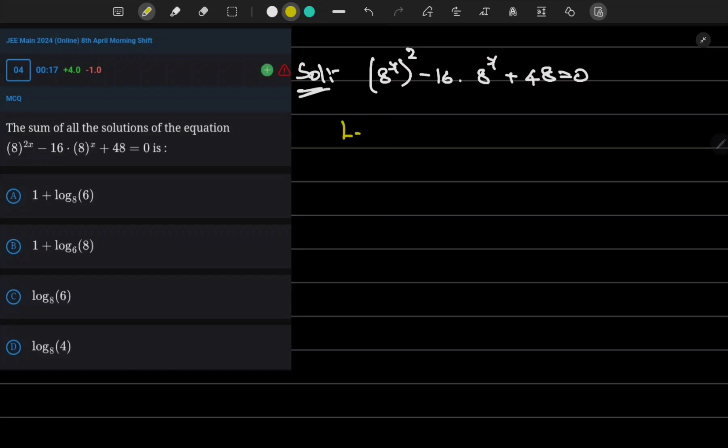Now let me consider 8^x as t. Then my quadratic equation can be written as t² - 16t + 48 = 0.